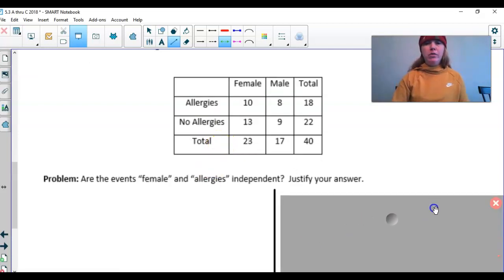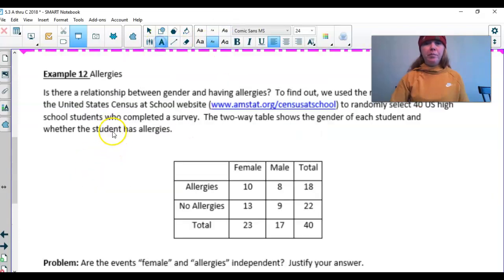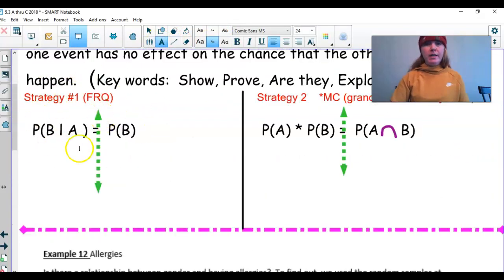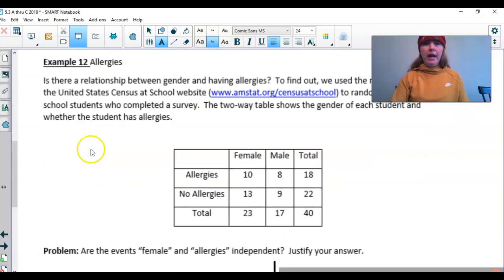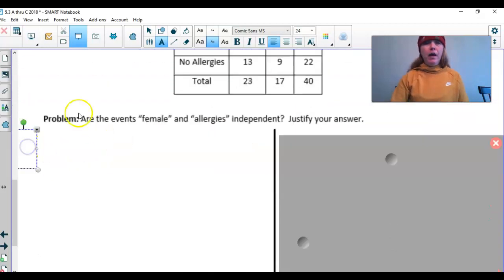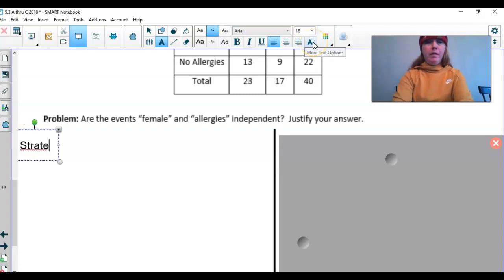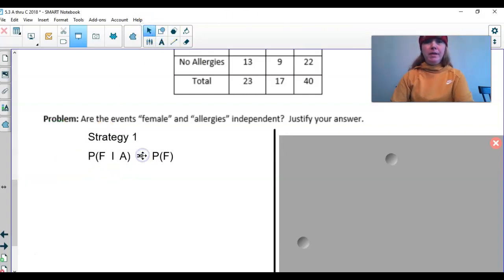Just a friendly reminder, this is strategy number one. So I will put it in context right now. I want to figure out the probability of being female given we have allergies. That must be equal to the probability of being female. I'm going to move this over a little bit to have a little more room. Again, these are two different problems right now.